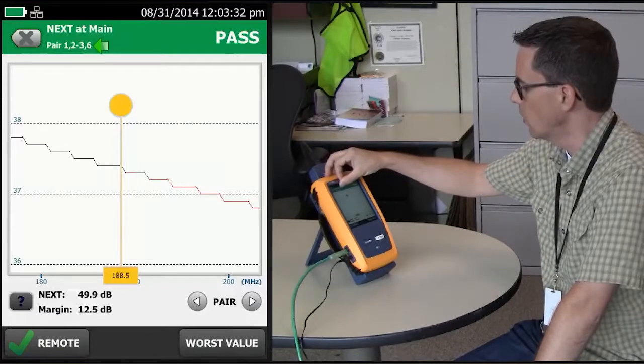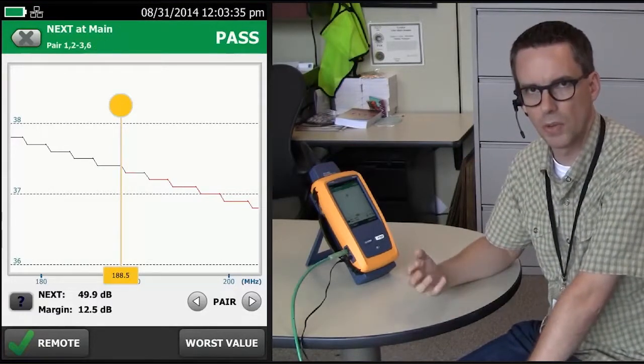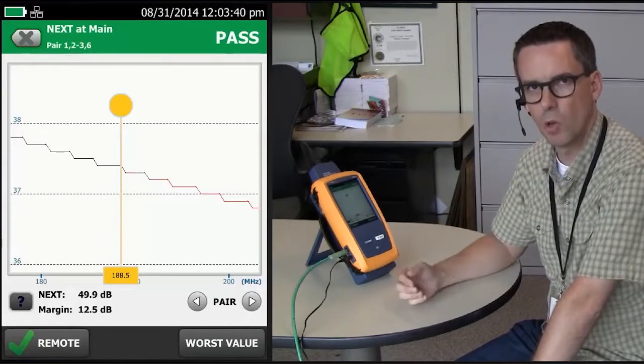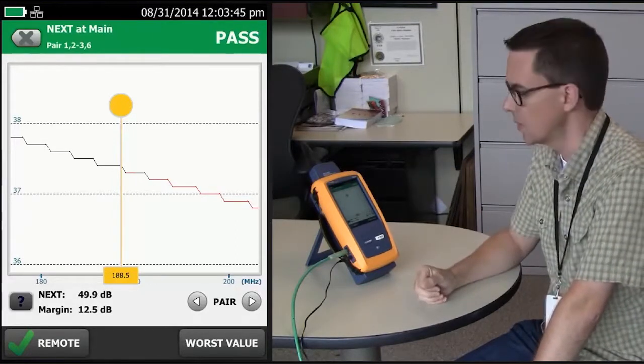This is for crosstalk on pair 1, 2, 3, 6. I said the 4 dB rule applies based on the insertion loss. Well, does it apply on the insertion loss of pair 1, 2 or pair 3, 6? It's pair 3, 6. That's how it's defined in the standards.